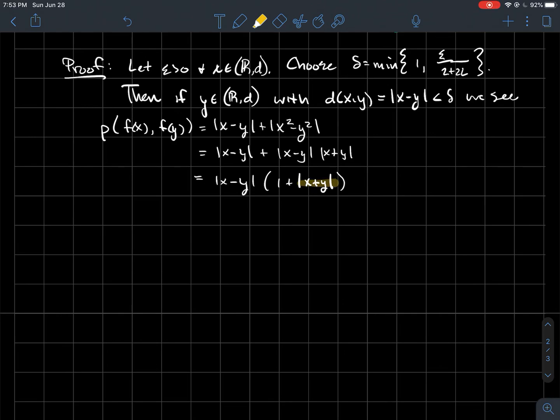Then recall from above, I know that that is less than 1 plus 2L. So then in all, this would be less than delta. And then this stuff, if this is 1 plus 2L, then I'd have 2 plus 2L here. And so what is delta though? Remember delta is whatever the smaller of these. So then that would be smaller than or equal to, I could put epsilon over 2 plus 2L here. And so in that case, what happens? I see that these cancel, and I just get epsilon at the end of the day. And so that proves that this function f is continuous between these two metric spaces.